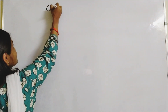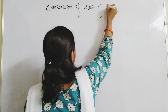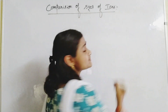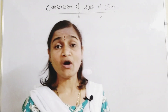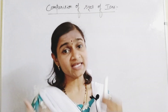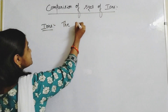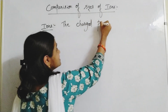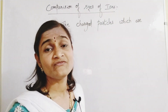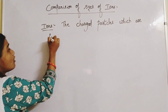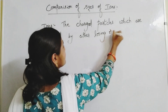Today's topic is the comparison of sizes of ions. So what are ions first of all? Ions are defined as the charged particles which are formed by either losing or gaining electrons.